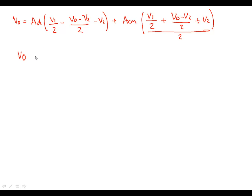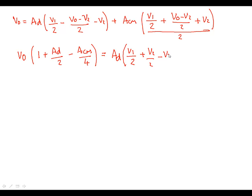Simplifying, we collect the Vout terms: Vout into 1 plus AD over 2, minus ACM over 4. On the right-hand side, the differential mode gain AD multiplies V1 over 2 plus V2 over 2, minus V2. For the common mode terms with ACM, the 2s cascade together giving V1 over 4, minus V2 over 4, plus V2 over 2. So we now have our common mode terms, our differential mode terms, and our output equation.